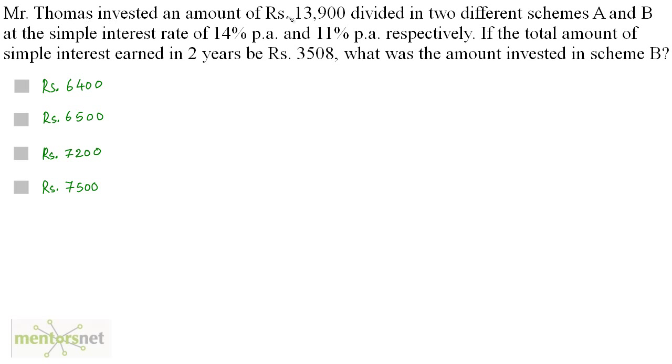So the total amount invested is 13,900. Let the principal amount invested in scheme A be Rs X. So the principal amount invested in scheme B will be obviously 13,900 minus X. Now the money was invested for two years and the simple interest got was 3,508 from both of these schemes combined. So I can say that interest from A plus interest from B is equals to 3,508.